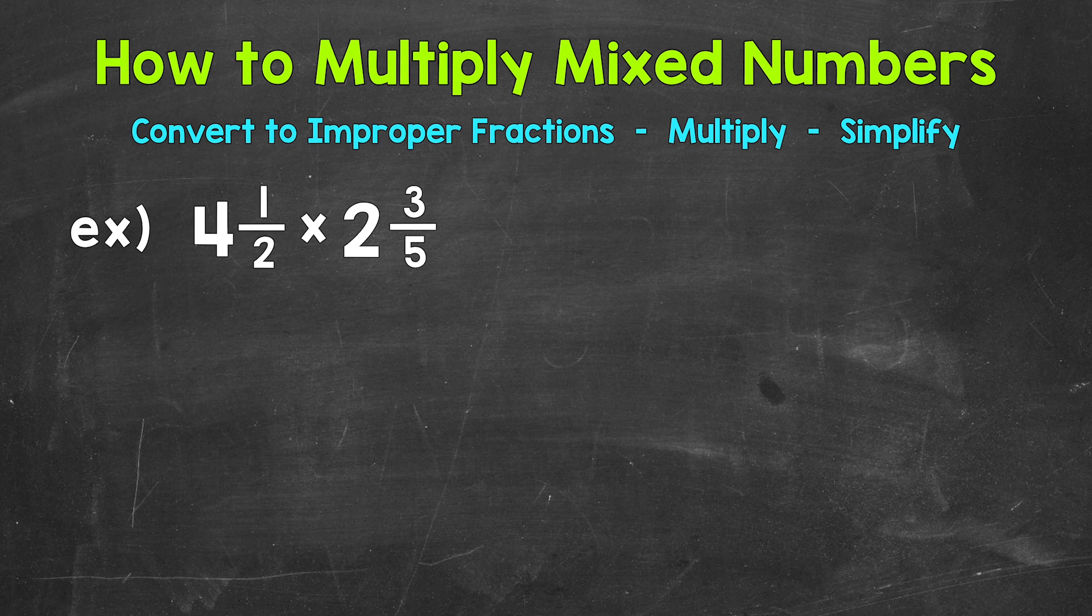Let's jump into our example where we have four and a half times two and three fifths. The first thing that we want to do is to convert our mixed numbers to improper fractions. That way we have a numerator and a denominator and we can multiply straight across.